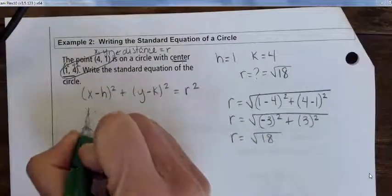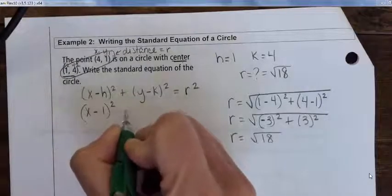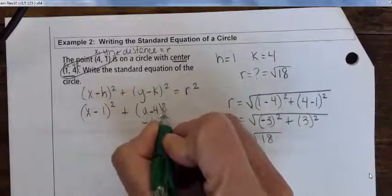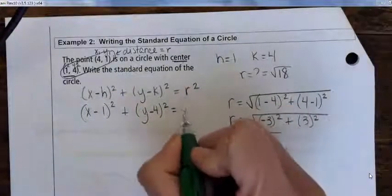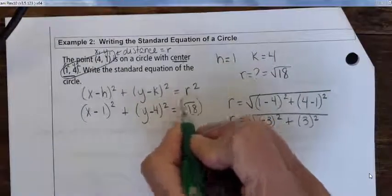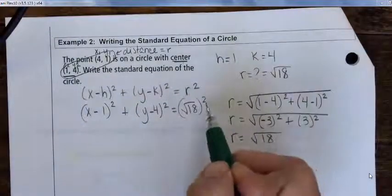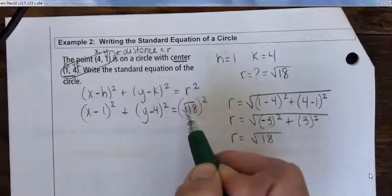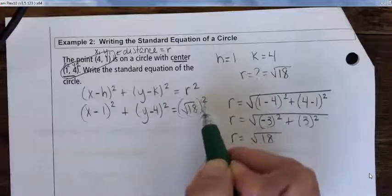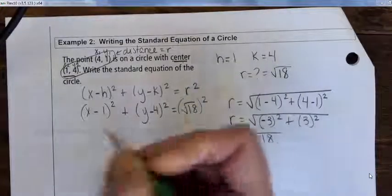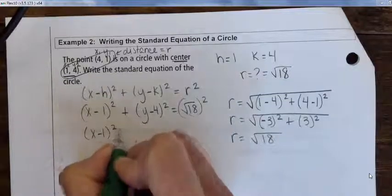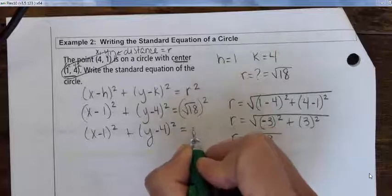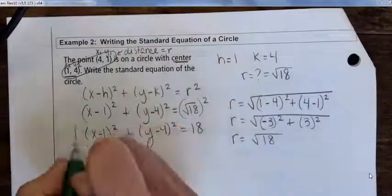Now with h = 1, k = 4, and r = √18, the standard equation is (x − 1)² + (y − 4)² = (√18)². When you square a square root, these two operations undo each other — they're inverses. So the equation simplifies to (x − 1)² + (y − 4)² = 18.